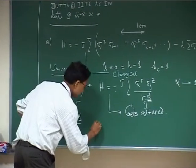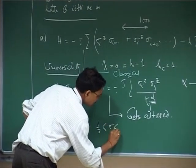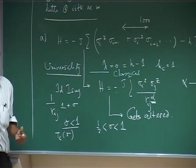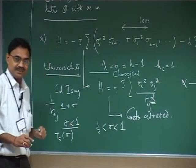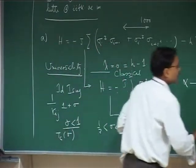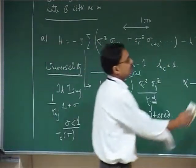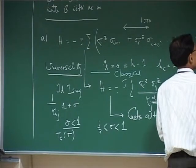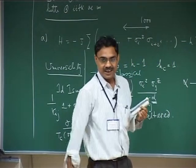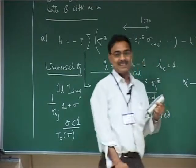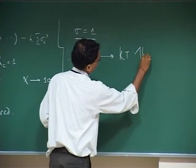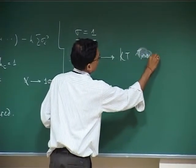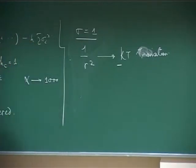There is a mean-field region from σ = 1/2 to σ = 1, where you have mean-field exponents, and in between you have continuously varying exponents. And when σ = 1, the interaction is a 1/r² inverse-square interaction, and one finds a transition — this transition is a Kosterlitz-Thouless transition.